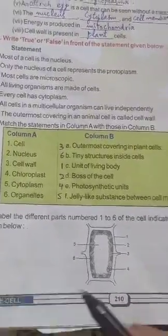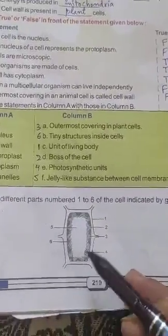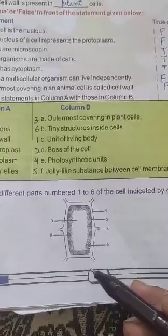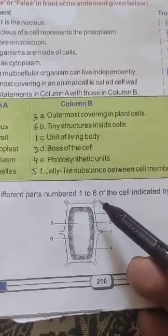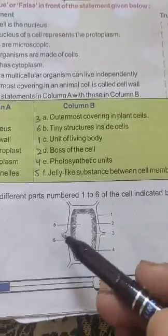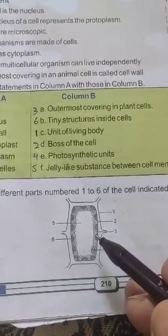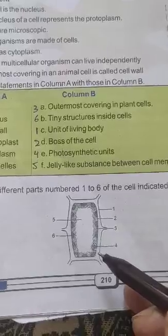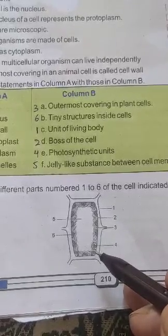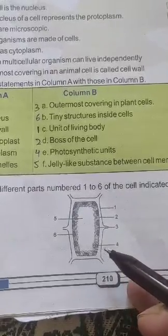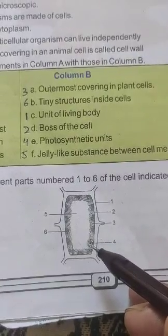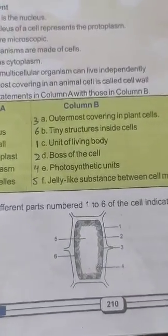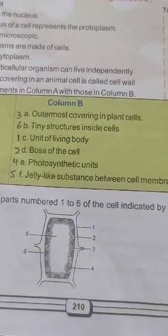Now question 19 — a diagram is given with different parts labeled one to six. We have to write the names. The outermost covering is the first part, then another membrane, then the third is cytoplasm. The fourth can be chloroplast or nucleus depending on the diagram. We identify and label each part accordingly.